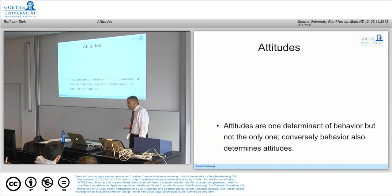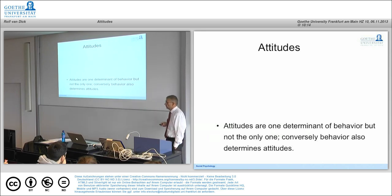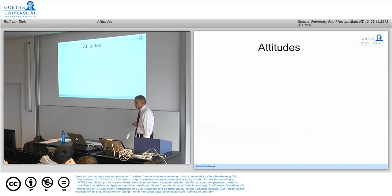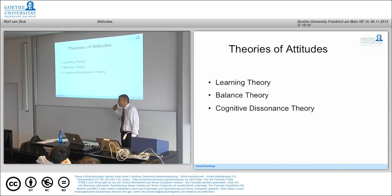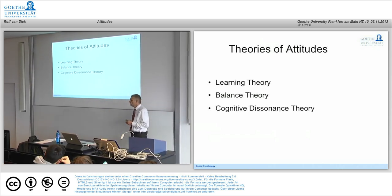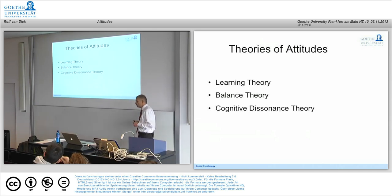Attitudes are one determinant of our behavior but not the only one. Conversely, our behavior sometimes also influences our attitudes rather than the other way around, as we will see in a moment. Where do attitudes come from? We can use three basic categories of theories: learning theories, balance theory, and cognitive dissonance theory.